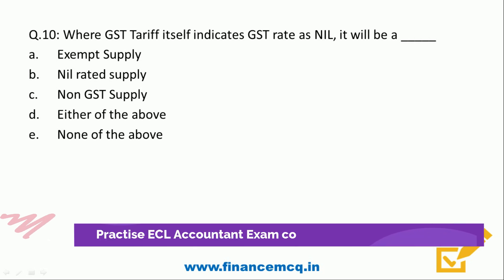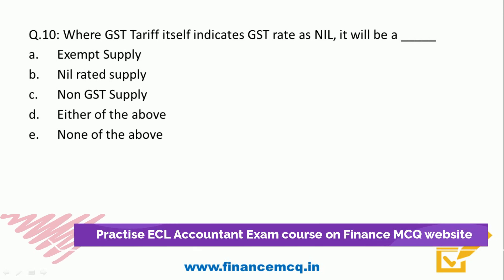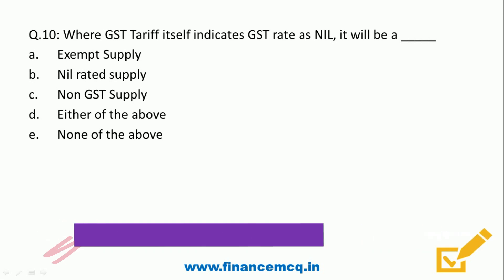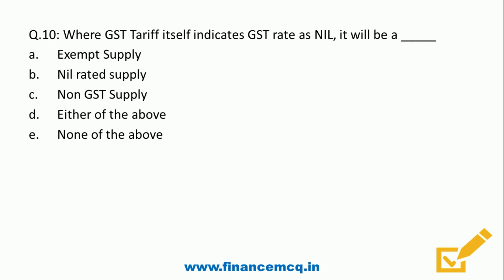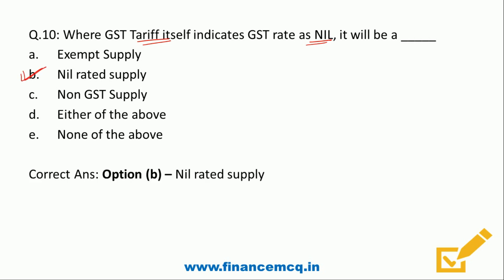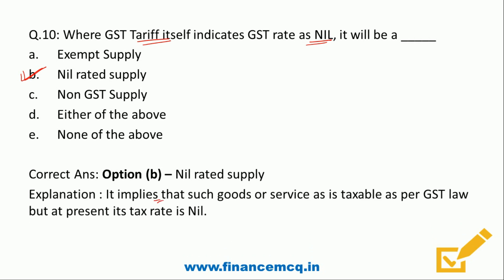Question 10: Where the GST tariff itself indicates GST rate as nil, it will be: A) Exempt supply, B) Nil rated supply, C) Non-GST supply, D) Either of the above, E) None of the above. In this case, the GST tariff indicates nil rate, so it is a nil rated supply — Option B is correct. This implies the goods or service is taxable, but the tax rate is nil. There is a difference between a non-taxable service and a taxable service having a nil rate; in the latter, it is chargeable to tax but at present the rate is nil.